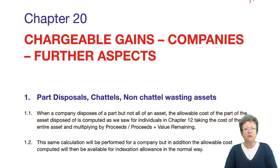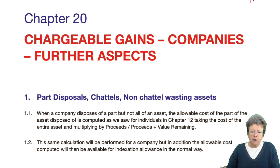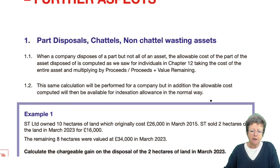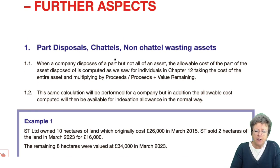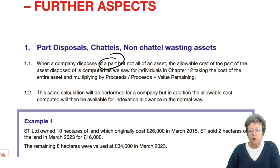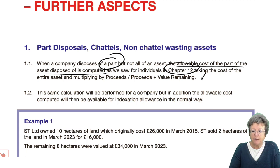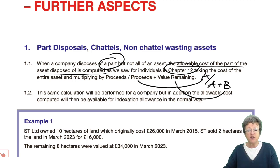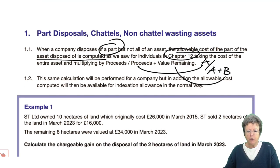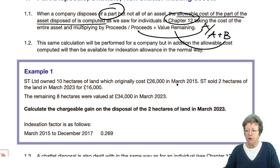A lot of the information in this chapter is a repeat of that, but obviously relates specifically to limited companies. So we're going to look at part disposals and chattels and non-wasting chattels. If you sell part but not all of an asset, then the allowable cost of the part of the asset disposed of, as we saw in individuals chapter 12, is A over A plus B, where A is the proceeds and B is the value remaining. You use the same formula for a company, but of course you've got indexation that needs to go with that.